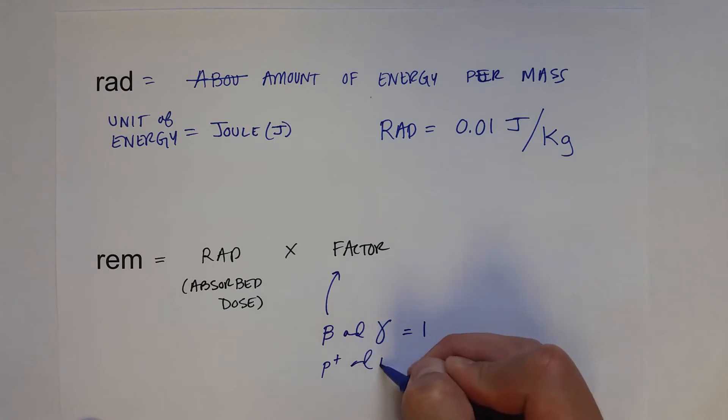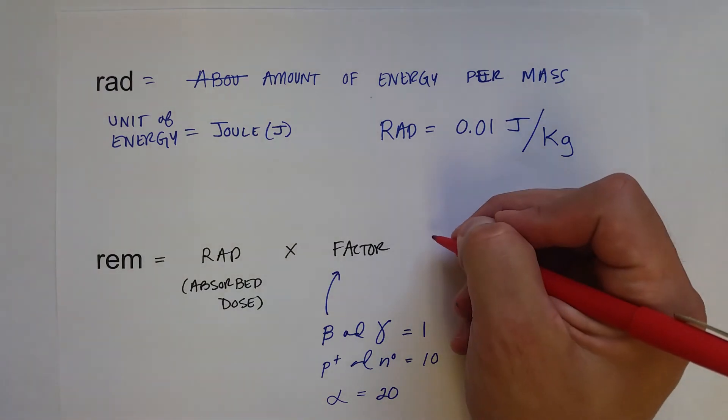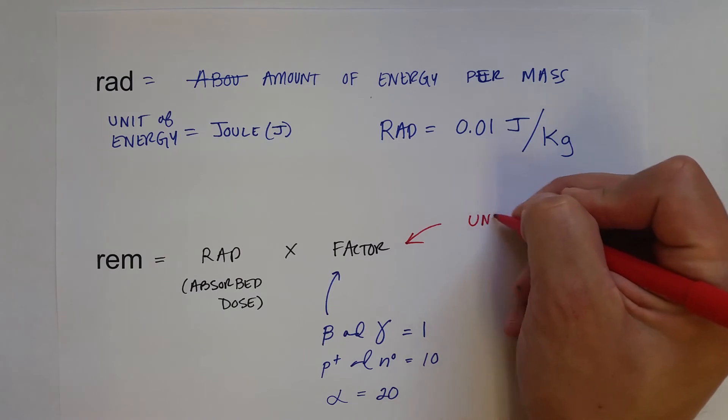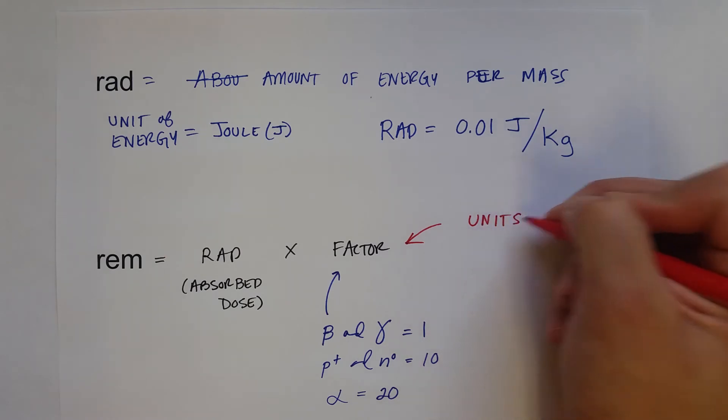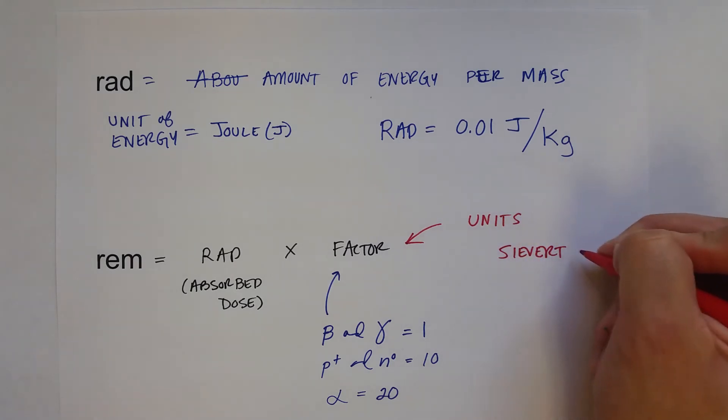Energetic protons and neutrons have a factor on the order of 10. And then alpha particles, because of their higher ionization power, have the highest factor on the order of 20. The units used for the REM in most sciences are the Sievert, or SV, and 1 Sievert equals 100 REM.